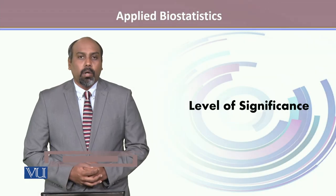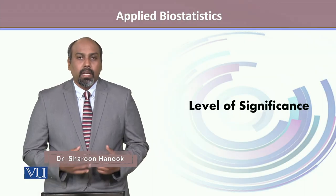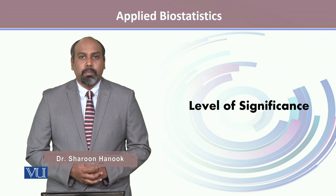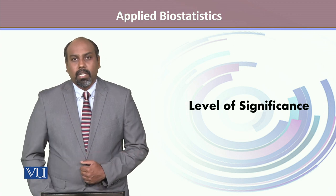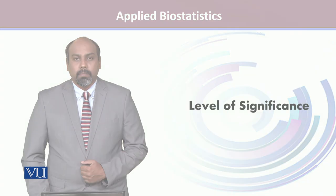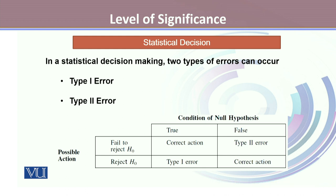In this module, we will talk about the level of significance. Level of significance provides the basis for the testing of hypothesis. In the process of statistical decision making, there are two types of error that can possibly occur: the type 1 error and type 2 error.